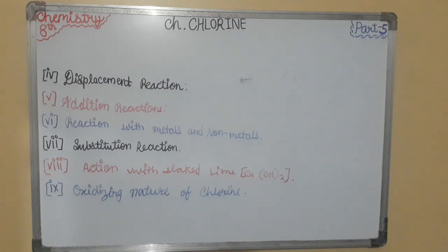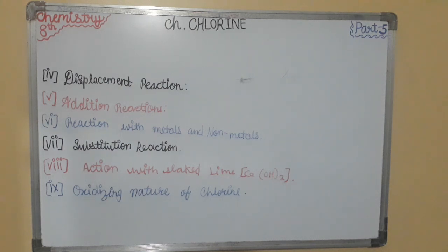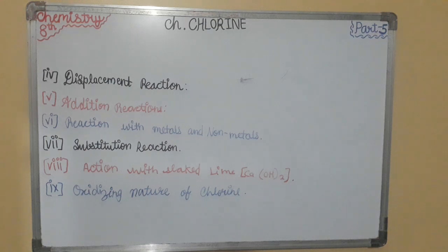First, it can gain electrons easily on account of its small size. Second, it has high affinity for hydrogen and removes hydrogen from compounds. Third, moist chlorine liberates nascent oxygen: Cl2 + H2O gives 2HCl + O (nascent oxygen). The nascent oxygen oxidizes: (A) sodium sulphite to sodium sulphate, and (B) phosphorous acid to sulphuric acid.